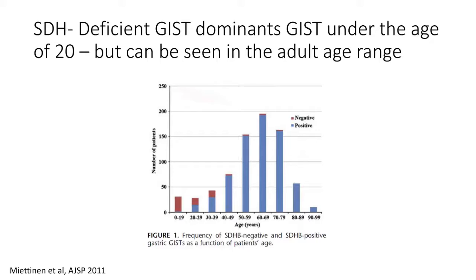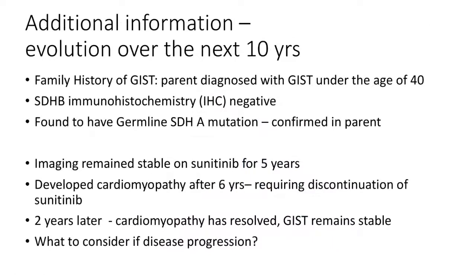It's also important to know that there are adults who have SDH-deficient GIST — represented by the small red sections at the top of each bar. Whether these patients had their disease for decades before diagnosis in adulthood, or whether the disease initiates in the adult age range, we don't completely understand. But it is important to know that this is a population that can occur across the age spectrum.